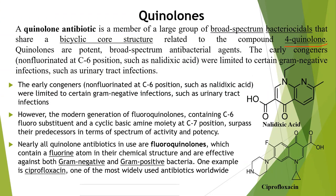Quinolones are a basic moiety which shows a bicyclic core structure — two ring moiety. We have studied quinolones as well as quinoline. In the fourth position there is an oxo group, that is a keto group. Quinolone antibiotics are members of a large group of broad-spectrum bactericidals that share a bicyclic core structure.